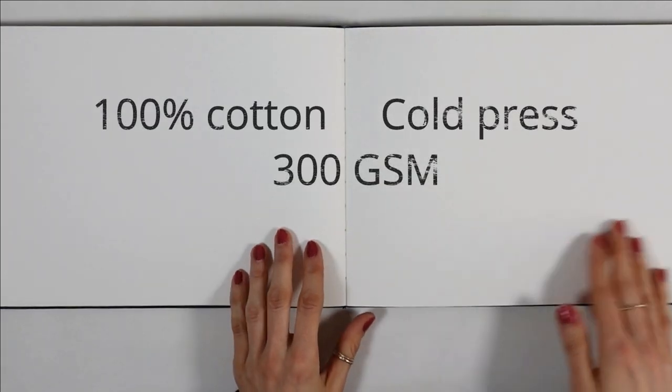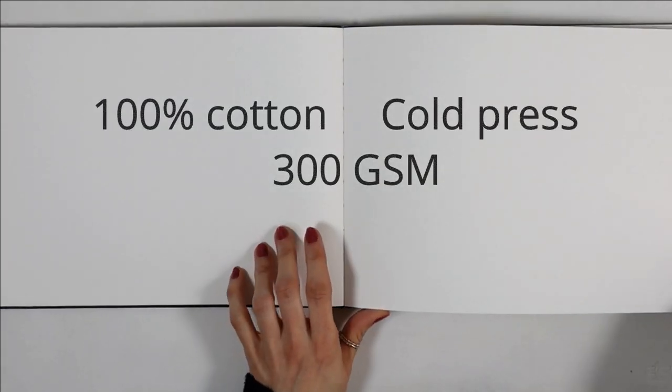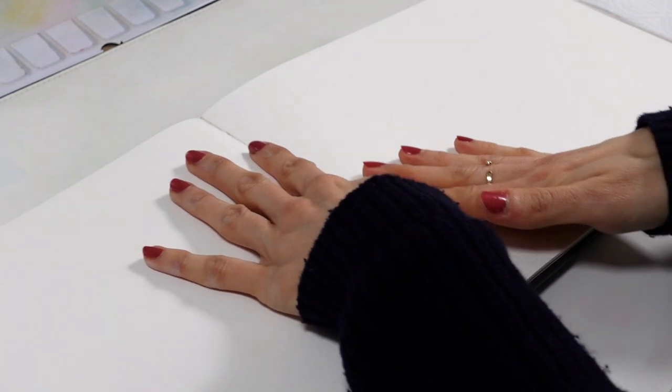About the paper now, it's 100% cotton, it's cold press and it's 300 grams per square meter, which for me is the best and the most versatile paper type for watercolor.